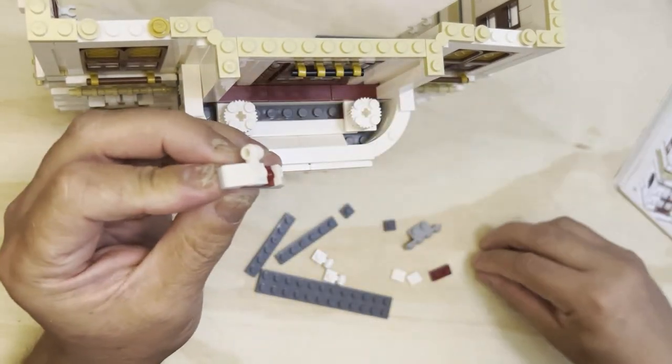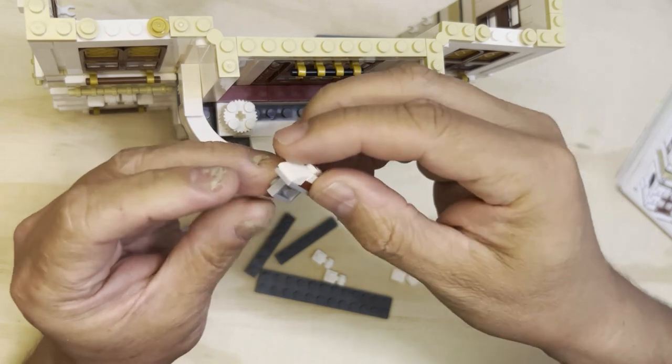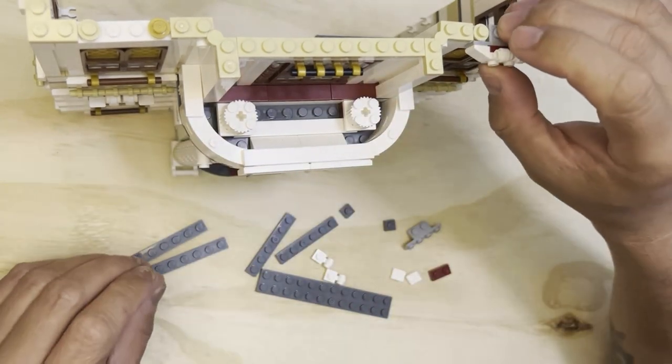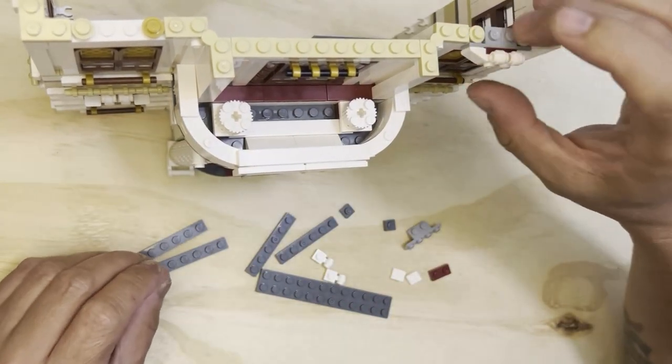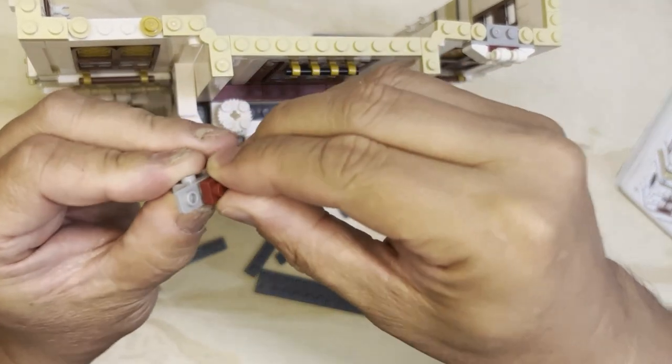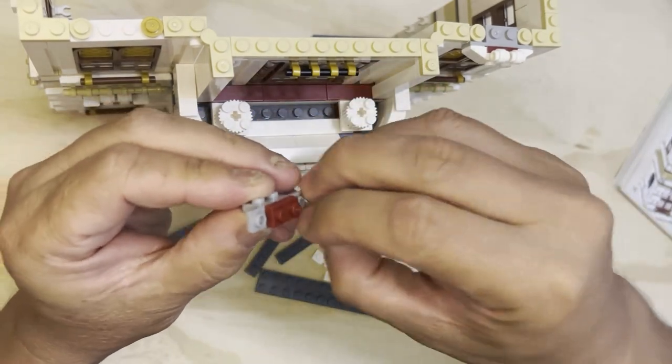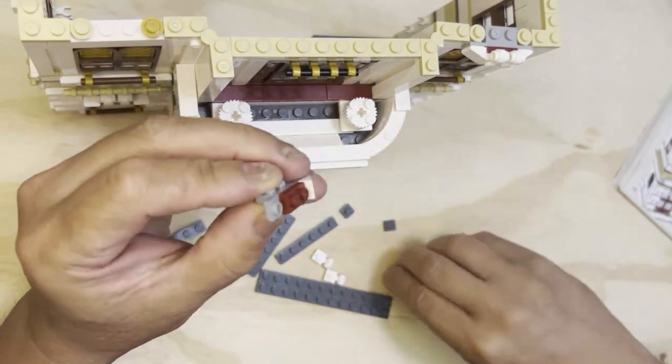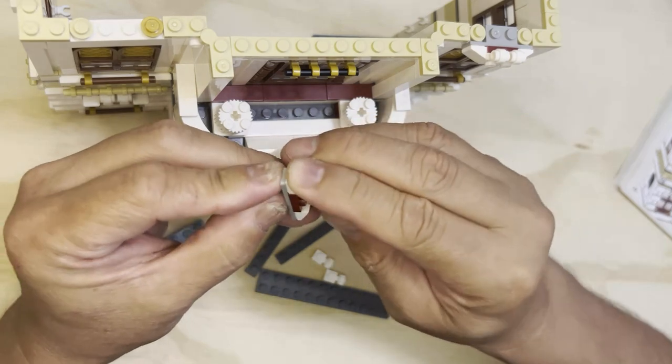I'm going to put this here and this here, and this goes like that. Alright, so I'm going to do it again. We're going to put this on together like that, then these little white cheese slopes.